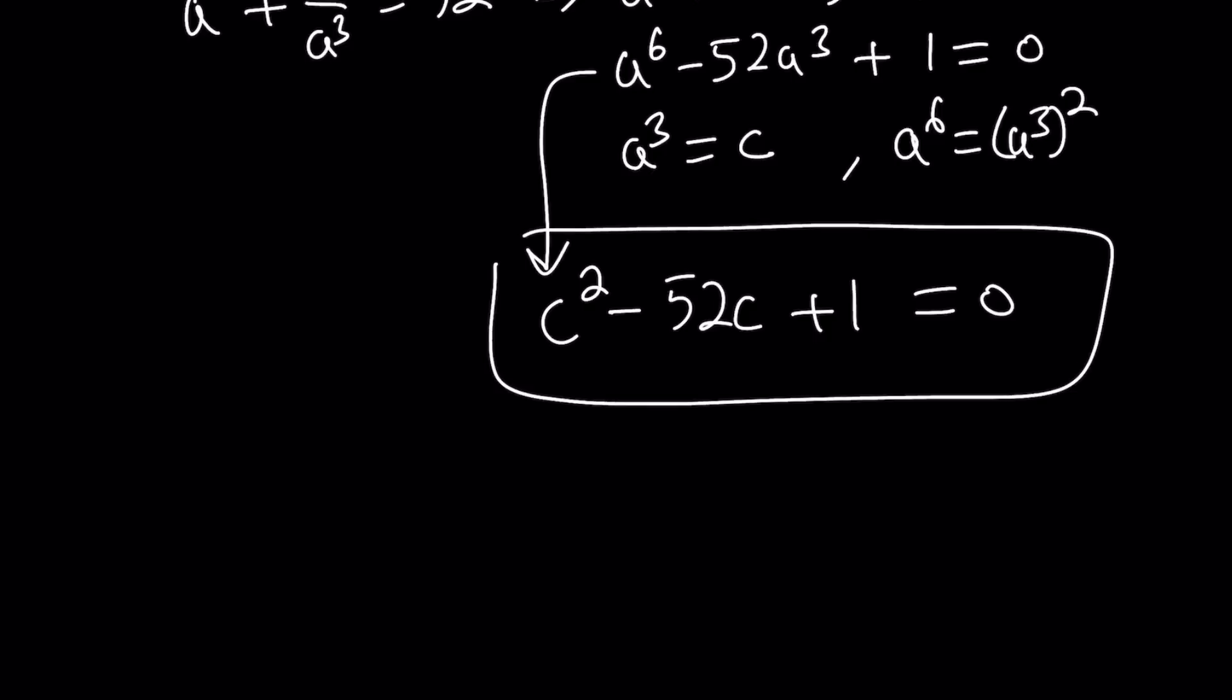Let's solve it using the quadratic formula. If you use the quadratic formula, it gives you 26 plus 15 root 3 for the c values, and you can call them c sub 1 and c sub 2 if you want, and 26 minus 15 root 3. Obviously, the coefficients are all rational so we get irrational conjugates.